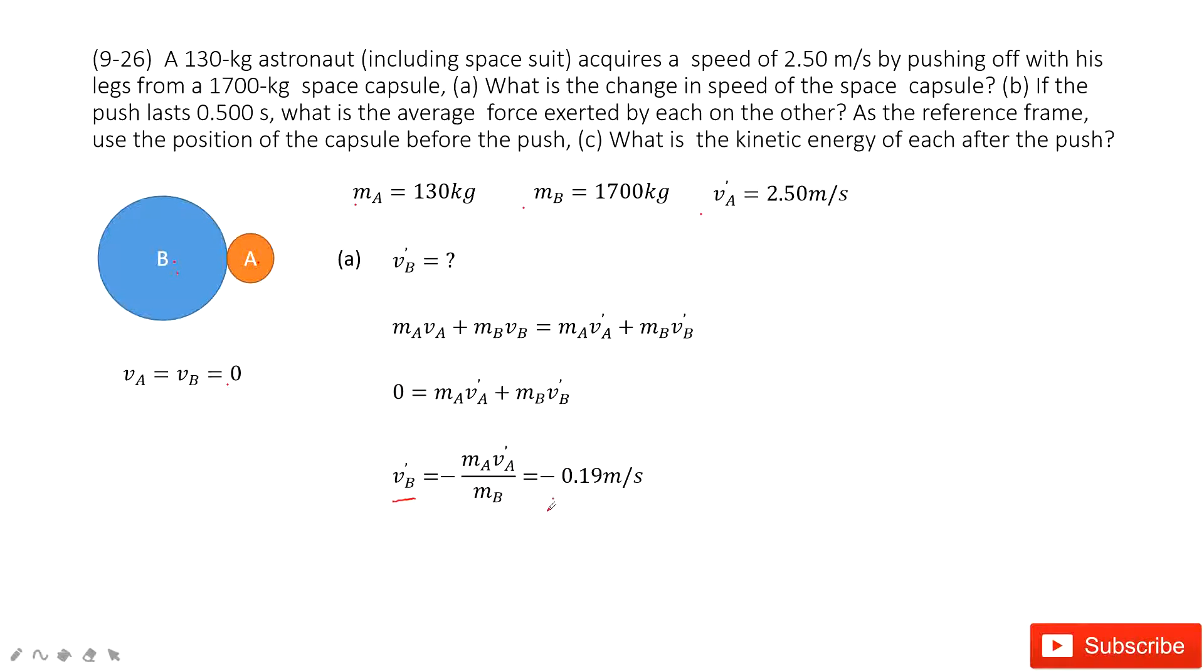B has a negative sign. This negative sign tells us the direction for the velocity for B. It moves backward when A moves forward.